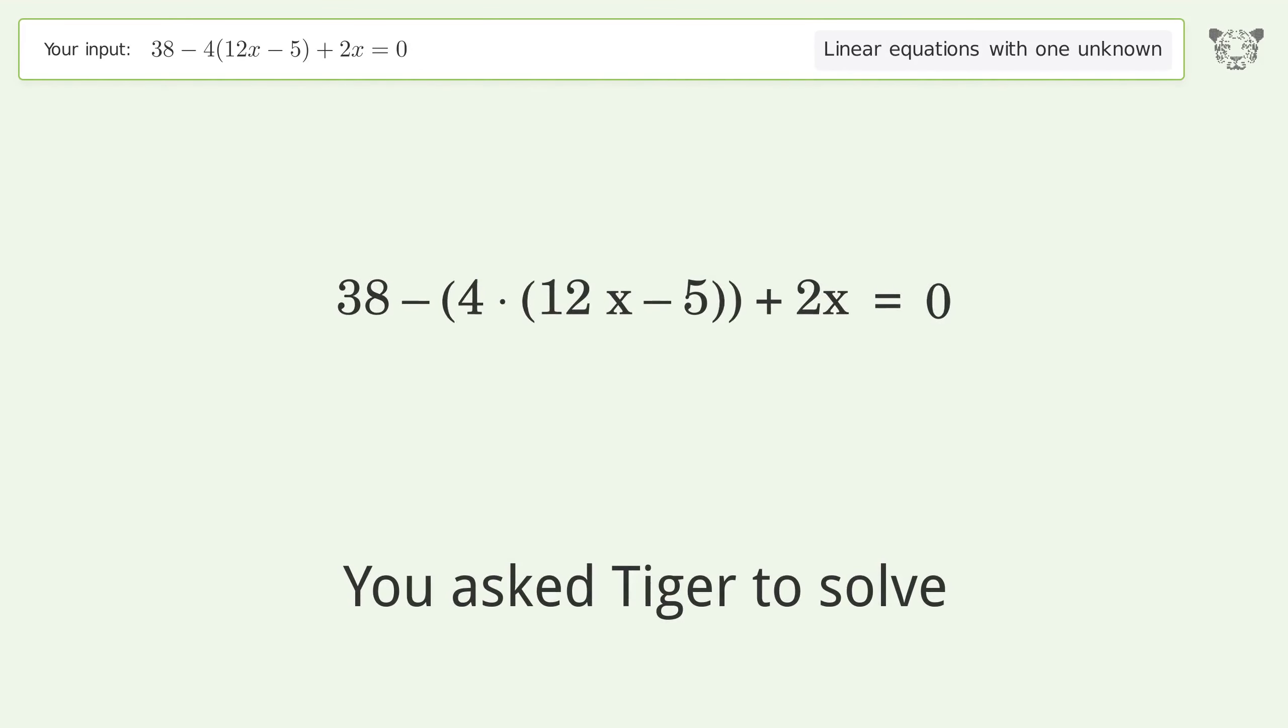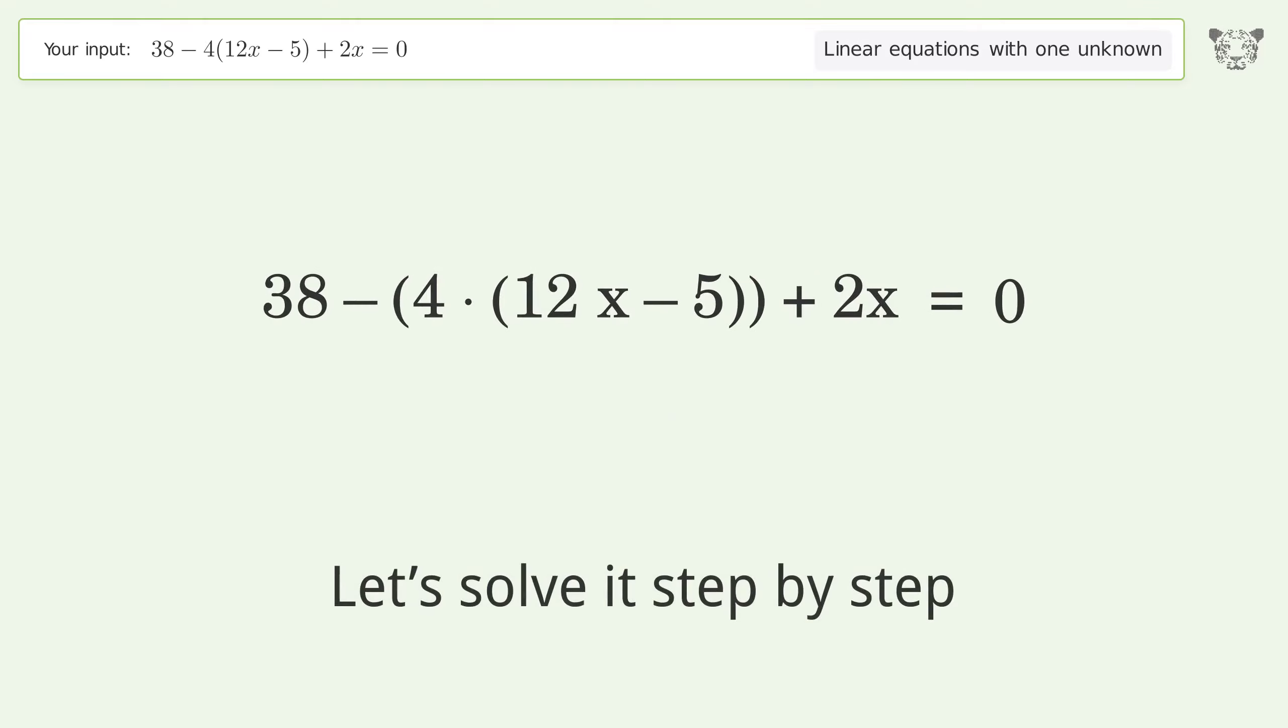You asked Tiger to solve this. It deals with linear equations with one unknown. The final result is x equals 29 over 23. Let's solve it step by step. Simplify the expression. Expand the parentheses.